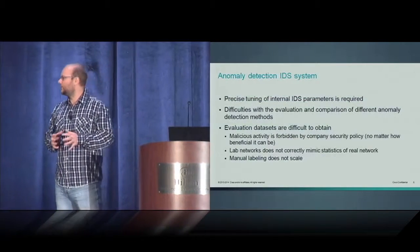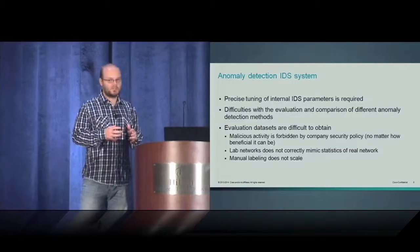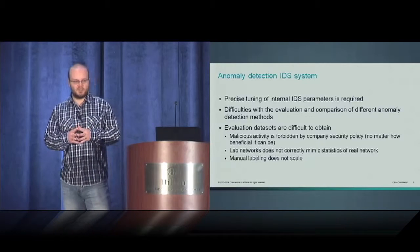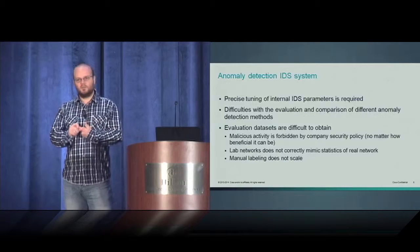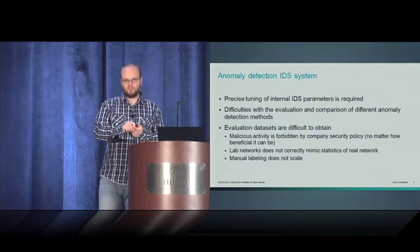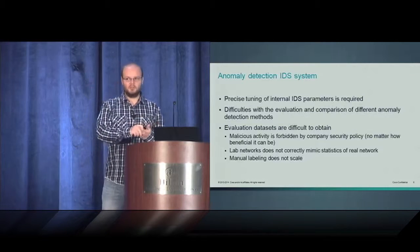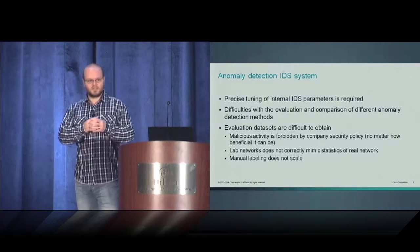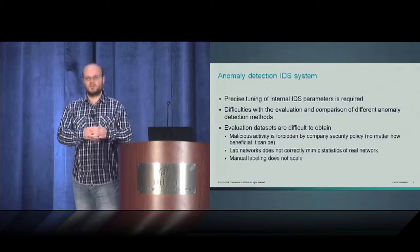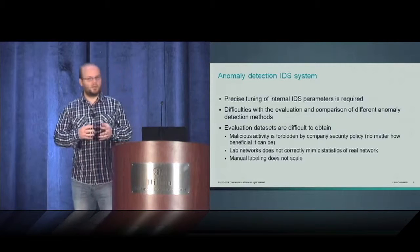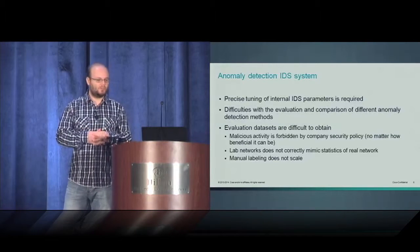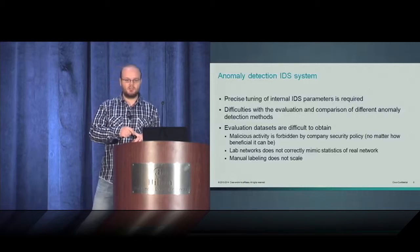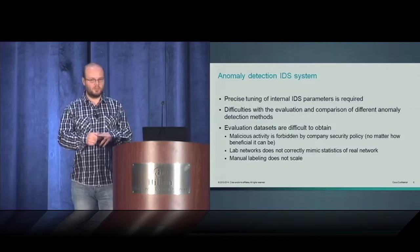The world is not a perfect place, so even anomaly detection systems suffer several drawbacks. Mainly they require precise tuning of their internal parameters. And second thing, if you develop some kind of anomaly detection algorithm, you have difficulties to evaluate and compare the results with different anomaly detection methods. The main reason is that there are no good evaluation datasets with good ground truth. The reasons are obvious: you can't run malicious activity on your corporate network, lab networks usually do not mimic the statistics of real world networks, and you can't do manual labeling because it doesn't scale.